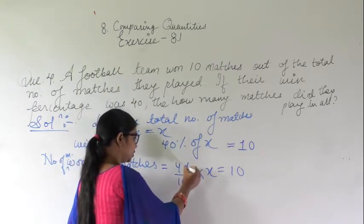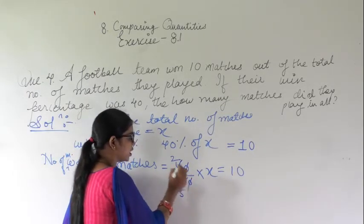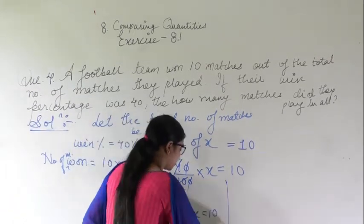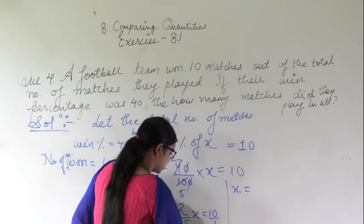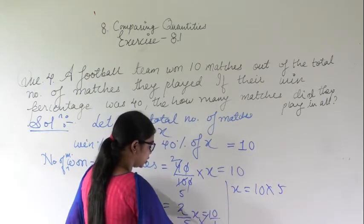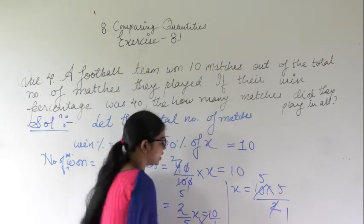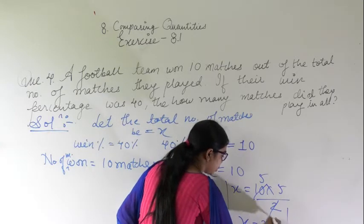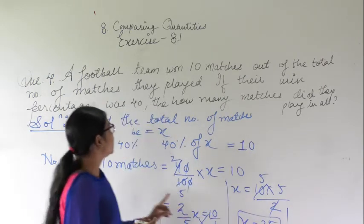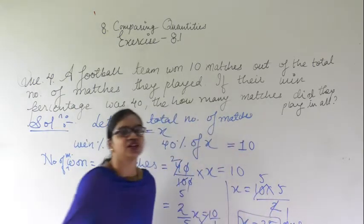From here the zeros get cancelled. 40/100 simplifies: 2 twos are 4 and 2 fives are 10, giving 2/5. So 2/5 of x equals 10. By cross multiplication, x equals 10 into 5 divided by 2, which gives x equal to 25. So x is the total number of matches which they have played in all.